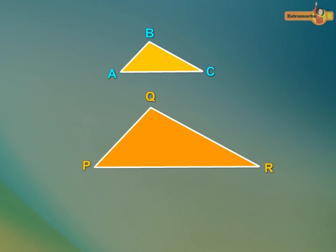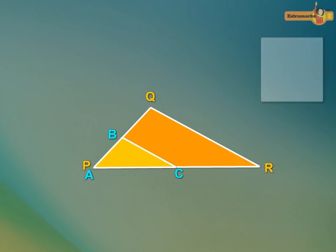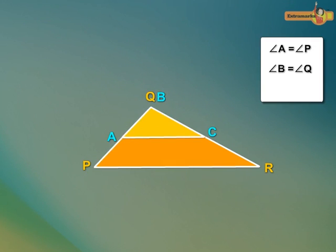Let us find out whether these two triangles, Triangle ABC and Triangle PQR, are similar or not. Here we see angle A is equal to angle P, angle B is equal to angle Q, and angle C is equal to angle R.